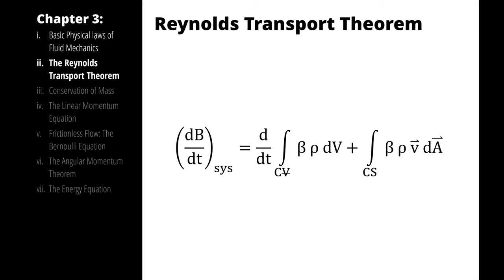The right term is the net rate of flow of B out of the control volume, where ρV·dA is the mass flow rate out of the control volume through dA. That means β·ρV·dA is the B flow rate out through dA on a net basis. An important note is that the velocity vector is measured relative to the control volume, so in situations where we have a moving control volume, we will have to deal with this, and we will do that later. The Reynolds Transport Theorem could be a video series in and of itself.